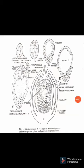Fertilization in Netum is siphonogamous, meaning the pollen tube acts as a carrier of the male gametes. As seen in figures E and F, the pollen grains are carried by the pollen tube, which grows toward the female gametophyte. This type of fertilization, where the pollen tube carries male gametes, is referred to as siphonogamous.